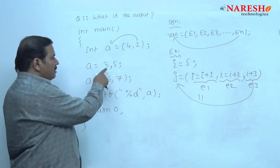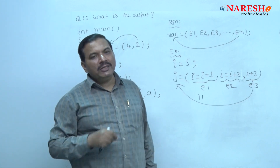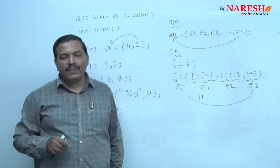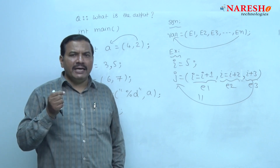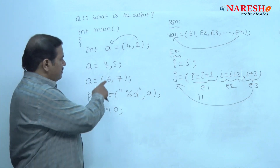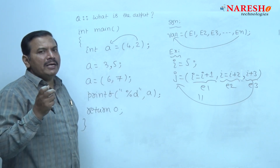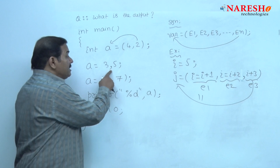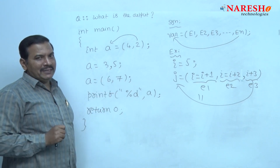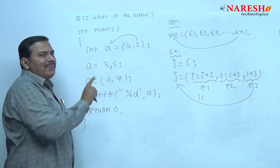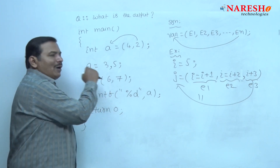This is because those expression values are not enclosed within parentheses. Comma has the least precedence compared to the assignment operator. In that statement there are two operators: comma and assignment. Since comma has least precedence, the assignment operator evaluates first and then the comma operator.